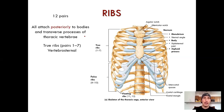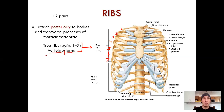Let's break the ribs down into categories. The true ribs are pairs one through seven — the first seven. We can also refer to them as vertebrosternal, meaning they have a posterior attachment to the vertebrae and an anterior attachment to the sternum.